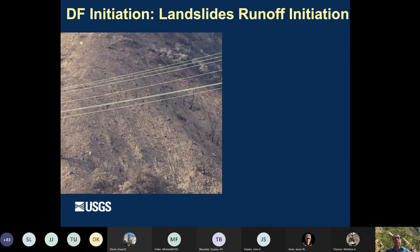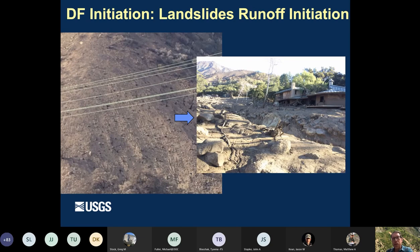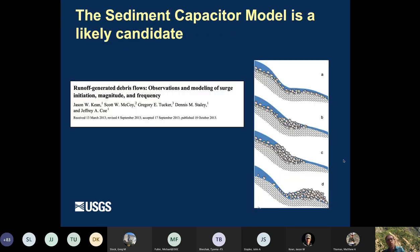Okay, so the next kind of initiation I want to tell you about is debris flow runoff initiation. So, you know, if you look at a slope that has rills like you can see in this photo, there's a question of how do you get from the rills to a full debris flow? Because it's not just a matter of picking up sediment, you have to reach sediment concentrations that are high enough about 40% to have a debris flow. So Jason Keen developed a really useful approach to think about this and it's called the sediment capacitor model.